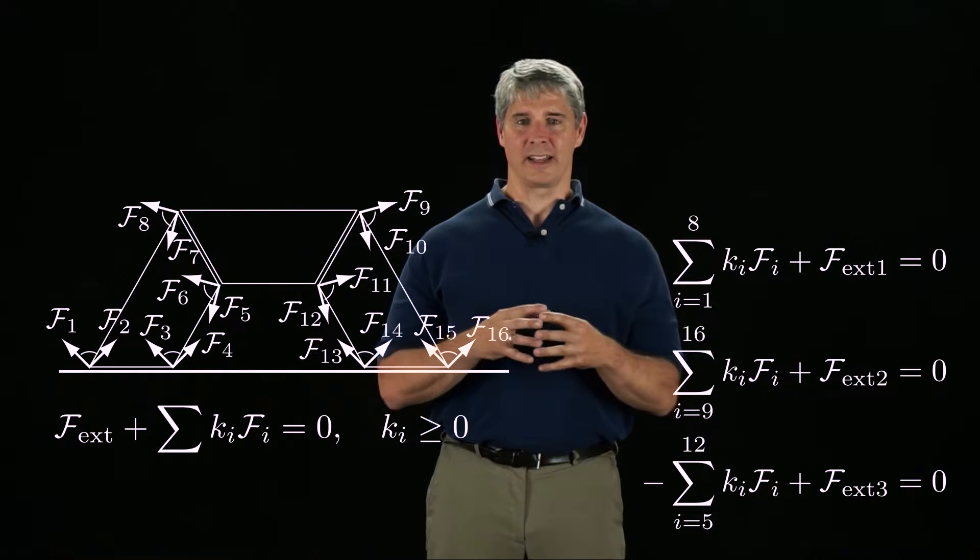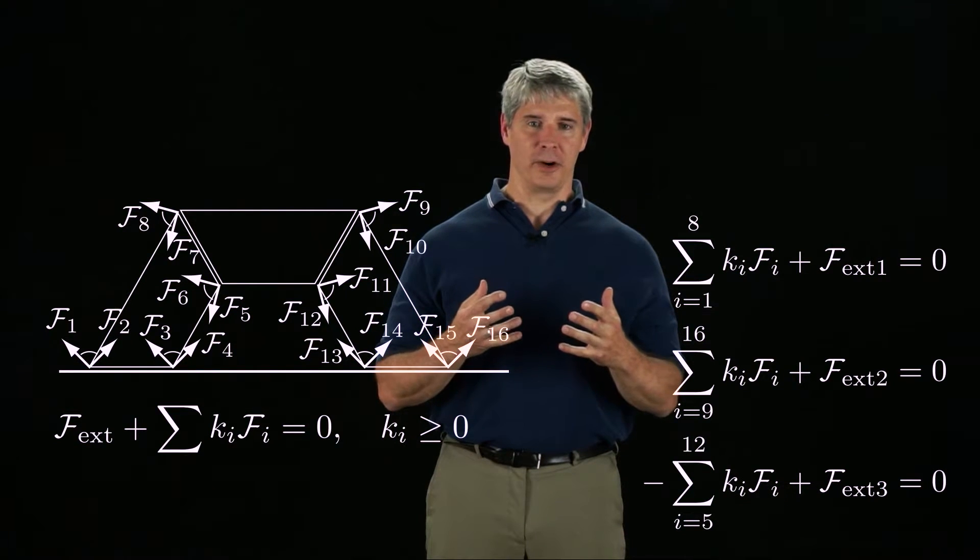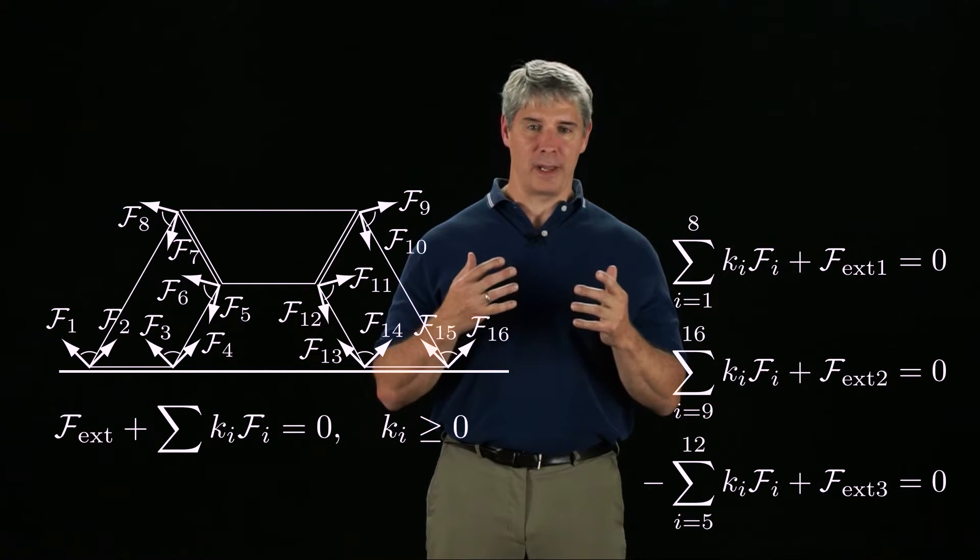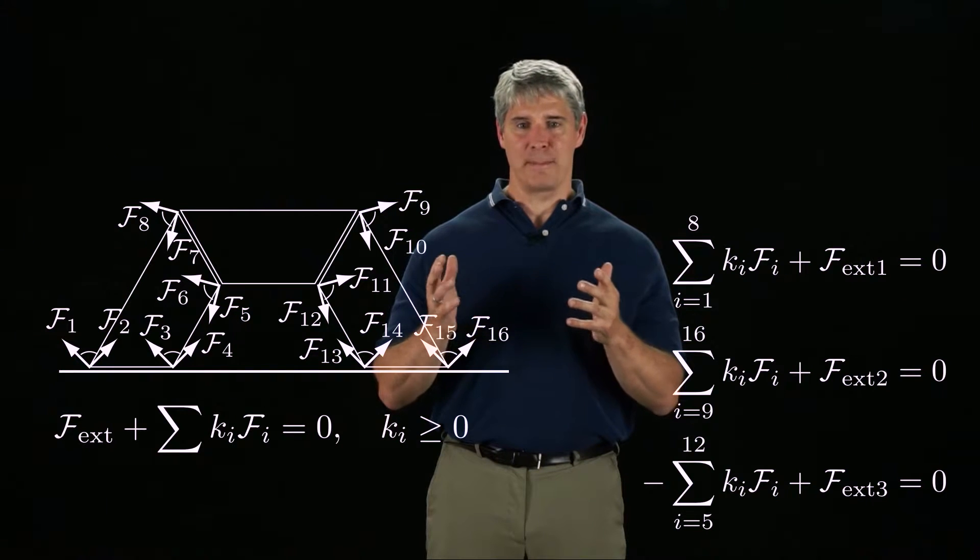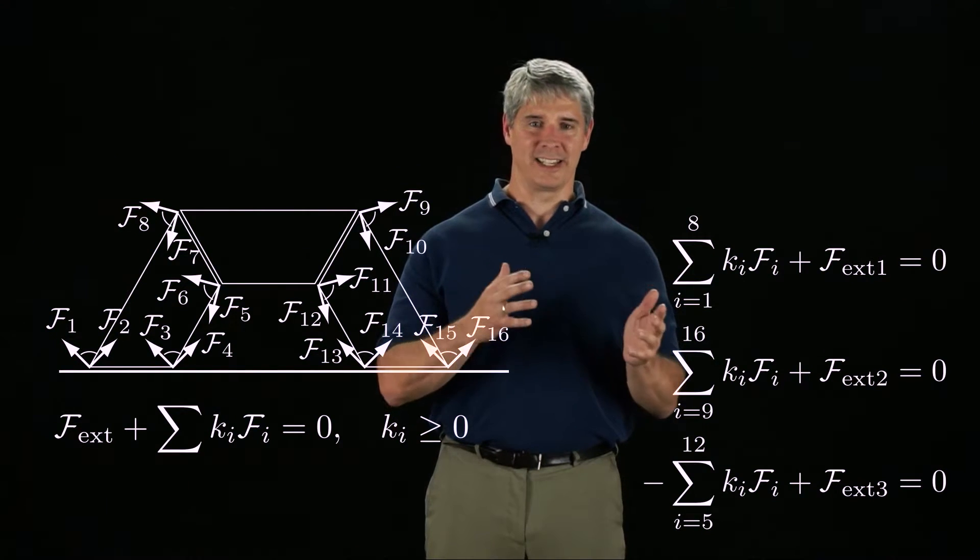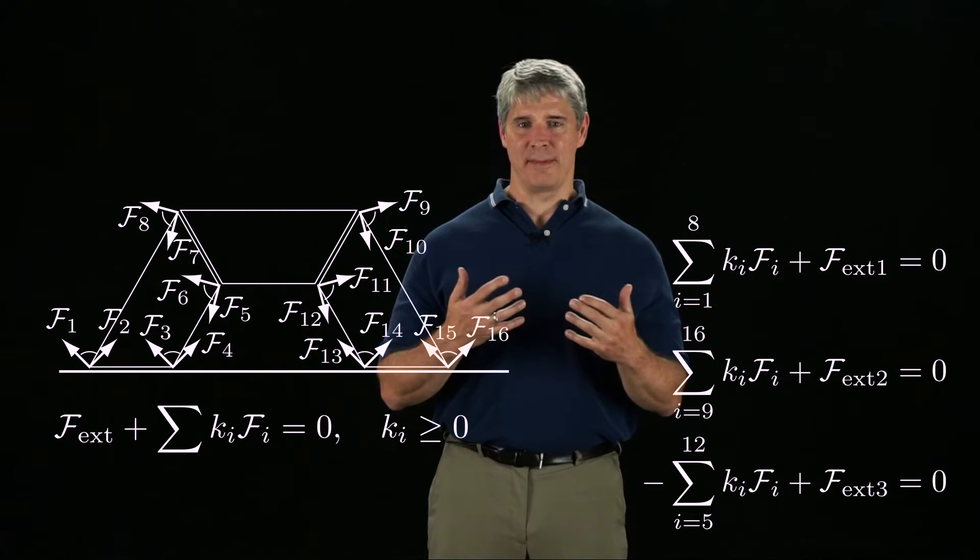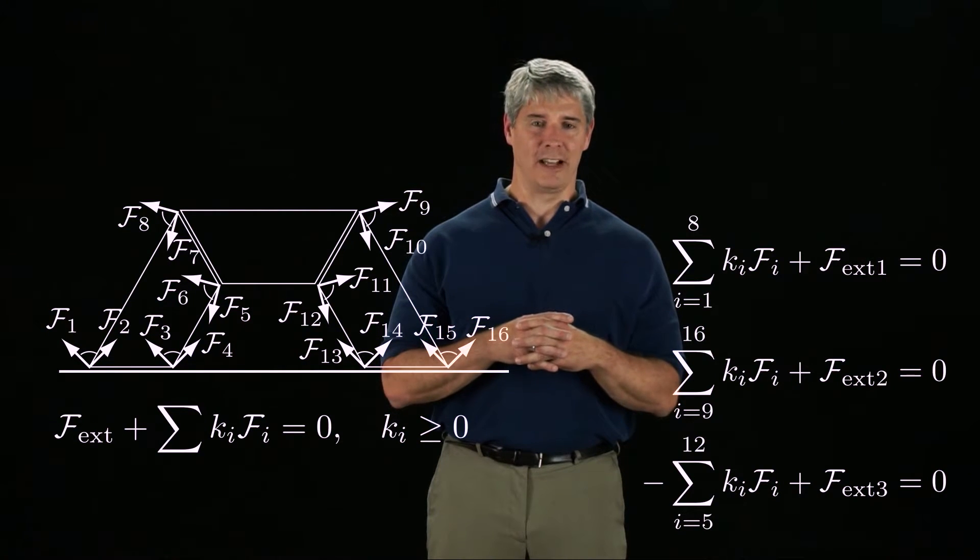Finally, for the keystone block at the top of the arch, the eight friction cone edges acting on it are minus f5 through minus f12. Since the keystone block must apply a wrench to the left block that is opposite the wrench the left block applies to the keystone, the coefficients k5 through k8 are the same as those we used in our analysis of the left block.